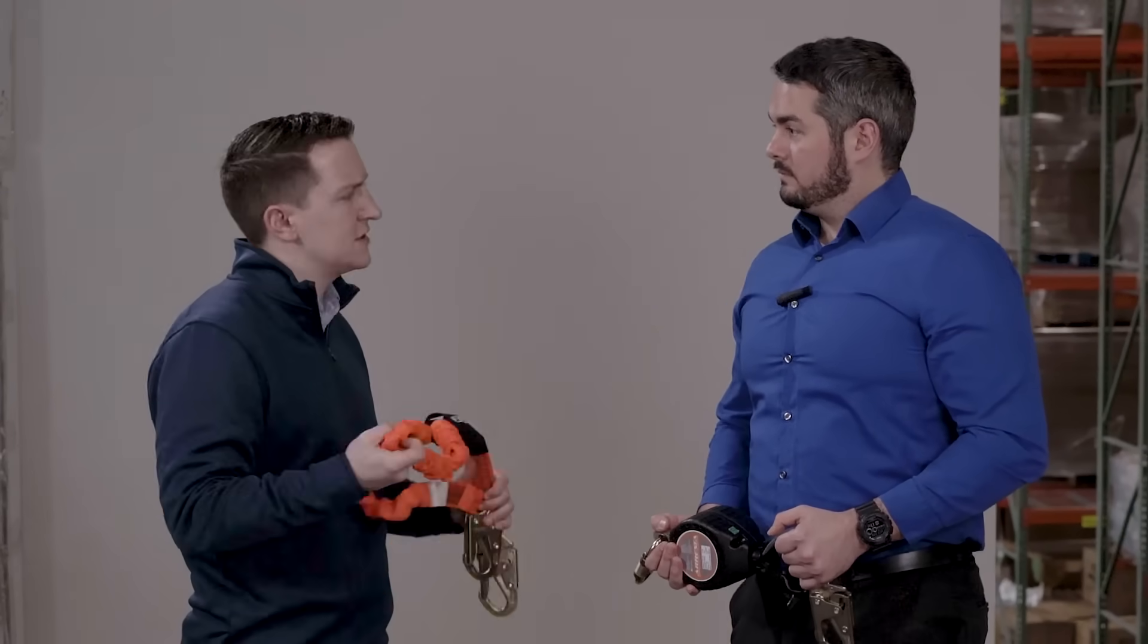So how much of a difference is the fall distance between these two? That's something that you need to calculate. Let's start with the lanyard. This here is a 6-foot lanyard. You need to add that to the height of your worker. So let's say your worker is 6 feet, just for easy math's sake, you add those two numbers together. This product is going to have 3 and a half feet of deceleration that's necessary. And you always want to add an extra 3 feet just for safety precautions. So in total that's going to give you 18 and a half feet of clearance that you need for this product.